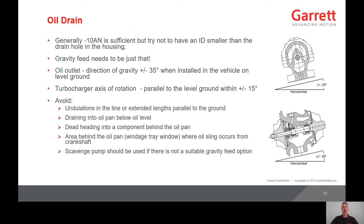You should always try to avoid undulations in the line or extended lengths parallel to the ground, draining into the oil pan below oil level, deadheading into a component behind the oil pan, or routing through an area where oil could be slung from the crankshaft. And if all of these things cannot be accomplished, a scavenge pump should be used to ensure that the oil is evacuated out of the center housing.